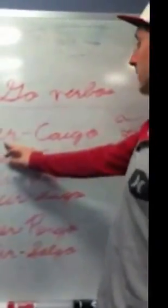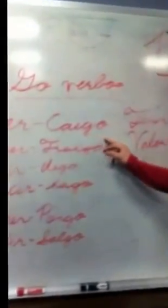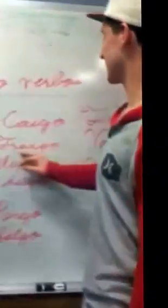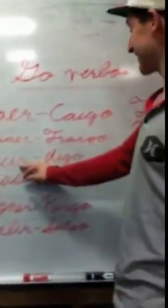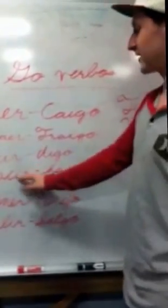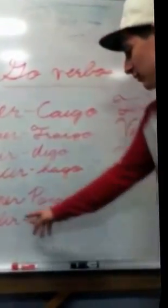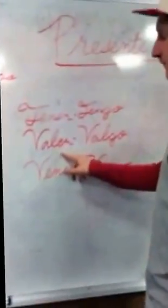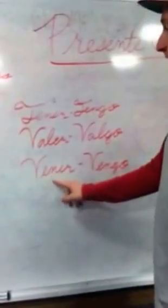Los go-verbos son Caer, que es Caigo, Traer es Traigo, Decir es Digo, Hacer es Hago, Poner es Pongo, Salir es Salgo, Tener es Tengo, Valer es Valgo, y Venir es Vengo.